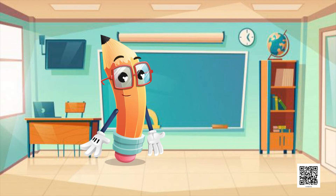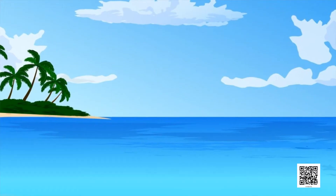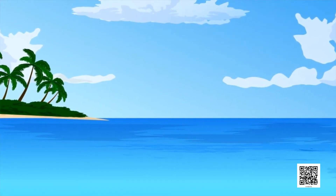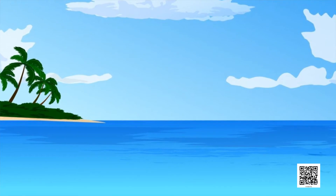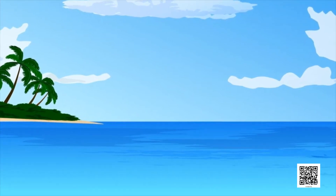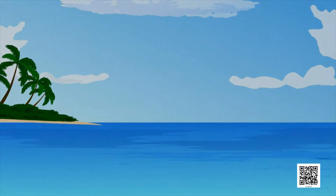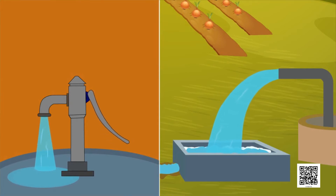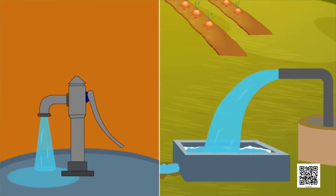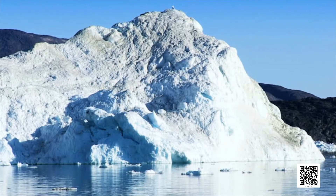Of the total water present on the earth, about 97.4% is in the seas and oceans. The sea water is highly salty or saline, and the saline water of seas and oceans is not fit for human consumption. Only 2.6% of the total water on the earth is fresh water.